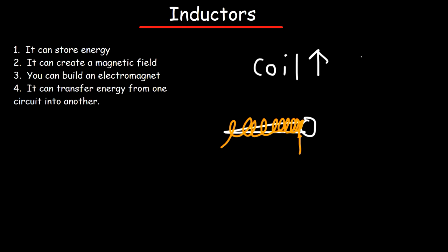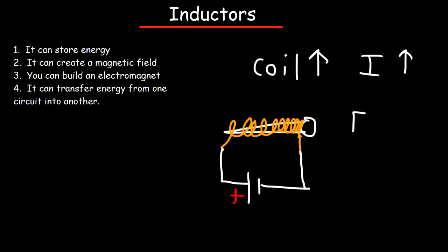The second thing is you want to increase the current that you apply to this electromagnet. So if you use a high-performing battery that can pump out a lot of current, you'll increase the strength of the electromagnet. So once the circuit is on, if there's a small piece of metal next to it, the electromagnet will pull that piece of metal to it.